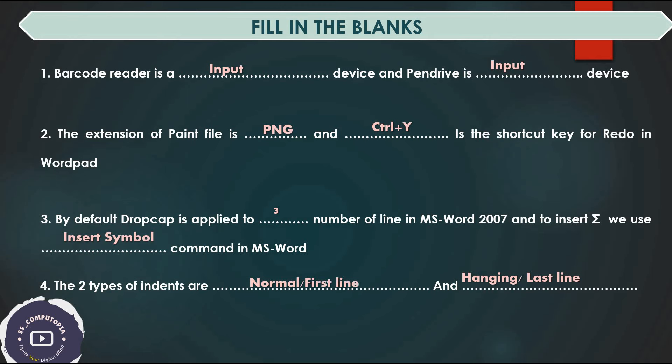Answers: Barcode reader is an input device. Pen drive is a storage device. Paint file extension is PNG or BMP. The shortcut key for redo is Ctrl+Y.